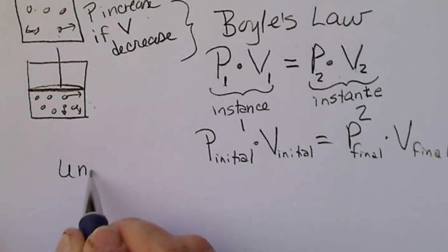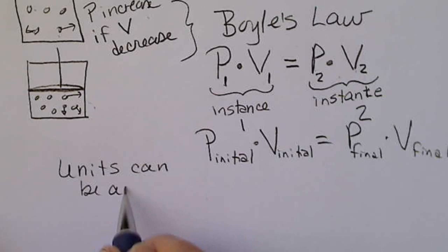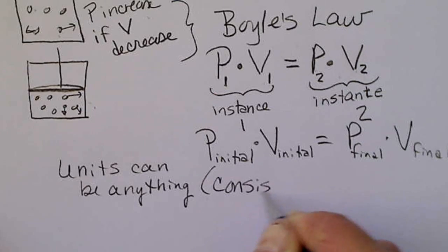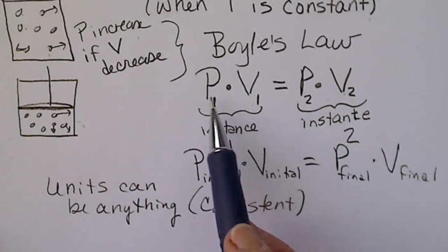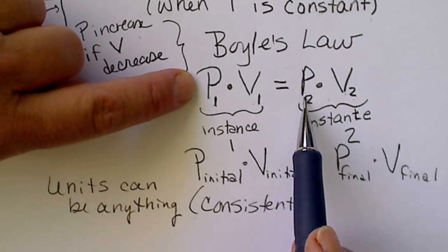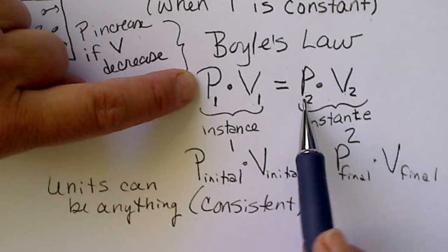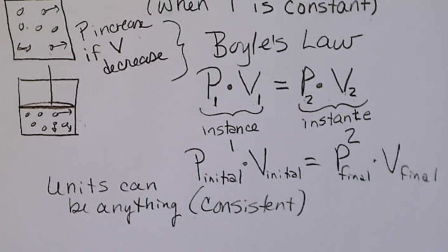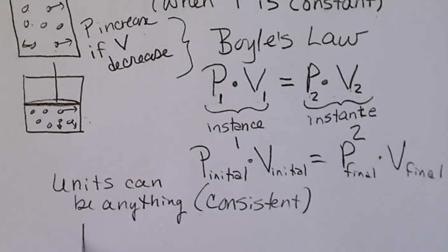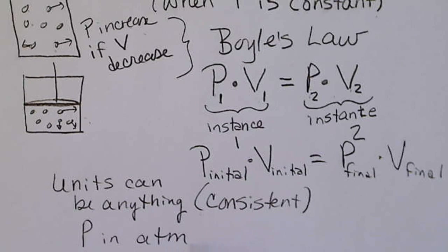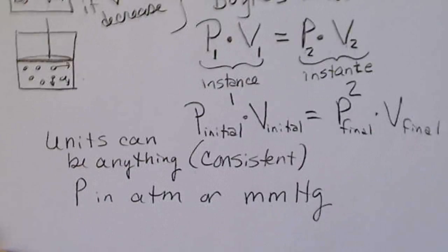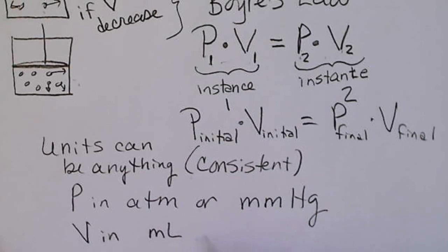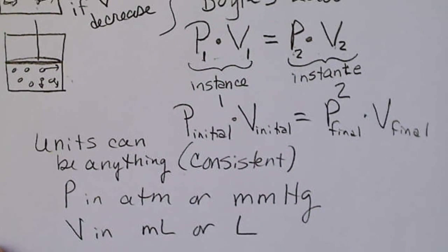Here, the units can be anything, as long as the units are consistent with each other. What that means is the pressure, as long as the two pressures were given, as long as they're the same pressure, we don't have to care about anything. And the same with the volumes. We're going to end up looking at some laws where the units are critical, but in this case, P could be in atmospheres or millimeters of mercury, as long as the two pressures were the same. And V could be in milliliters or liters.